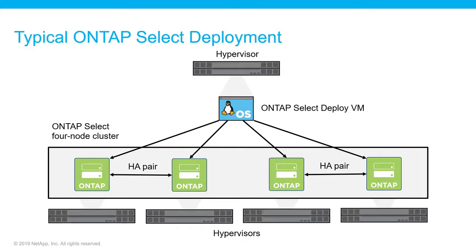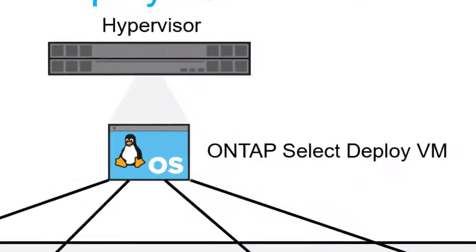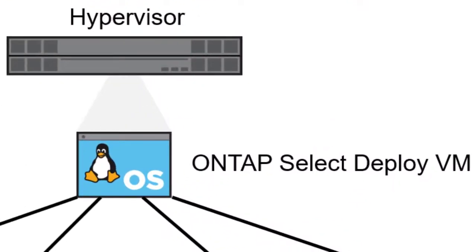This illustration shows a typical NetApp ONTAP Select 4-node cluster deployment. This video will guide you through the installation of the ONTAP Select Deploy Virtual Machine, or VM.